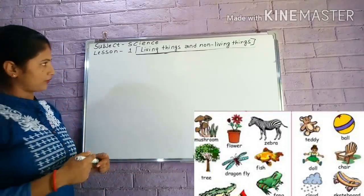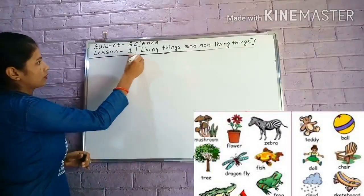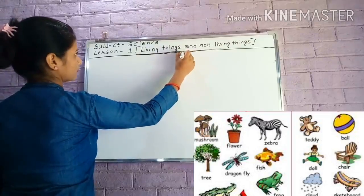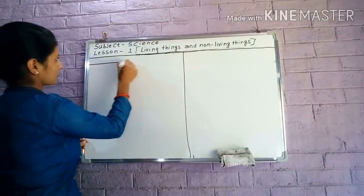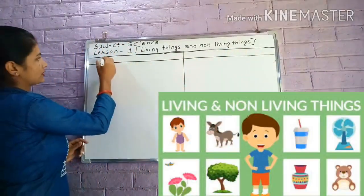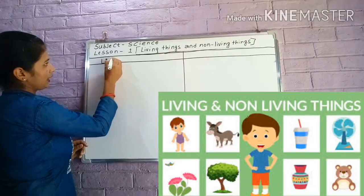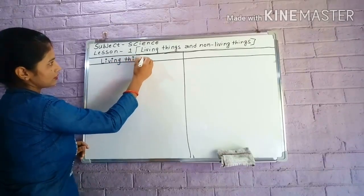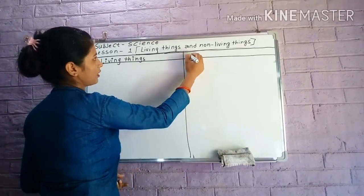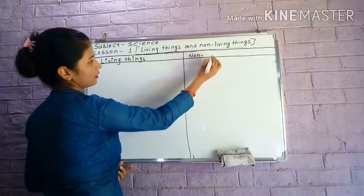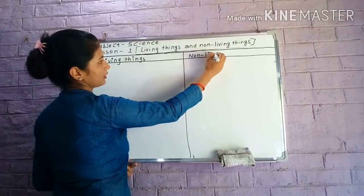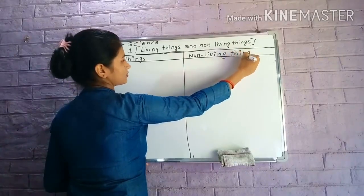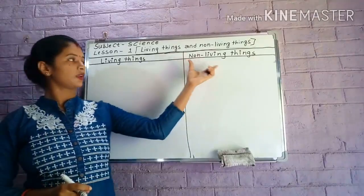Now I'll make one table. Here I'll draw the table of living things and non-living things. Here I'll write 'living things' and 'non-living things'. Living things and non-living things.